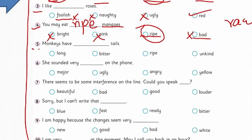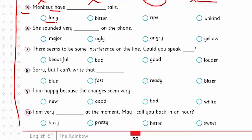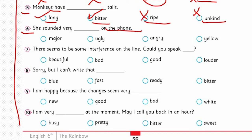The fifth one: 'Monkeys have ___ tails.' Options are long, bitter, ripe, or unkind. 'Bitter' means karwa — inappropriate here. 'Ripe' and 'unkind' are also inappropriate. So 'long' is the correct option. The sixth one: 'She sounded very ___ on the phone.' Options are major, ugly, angry, or yellow. It can't be yellow. Yes — 'angry' is the appropriate adjective. Quality can be both good and bad.